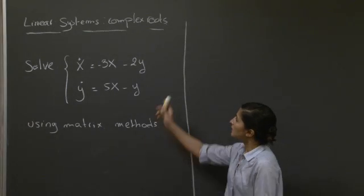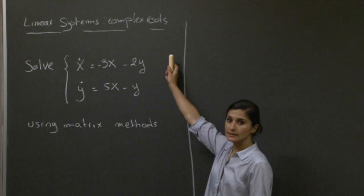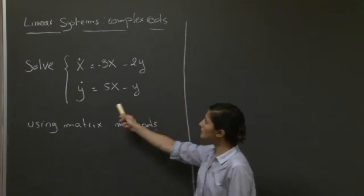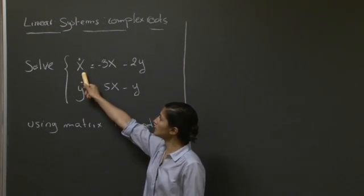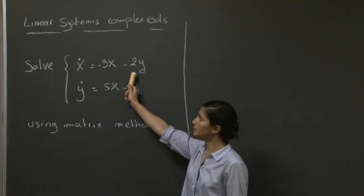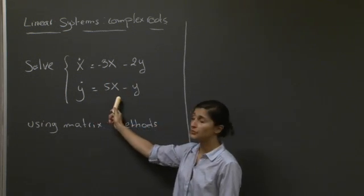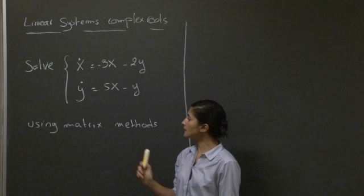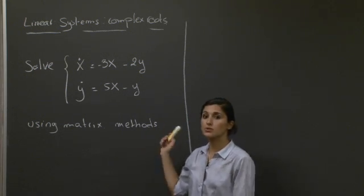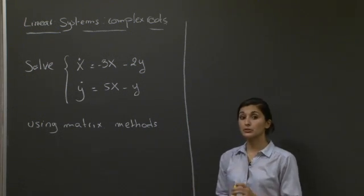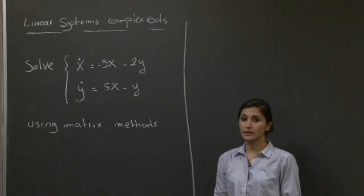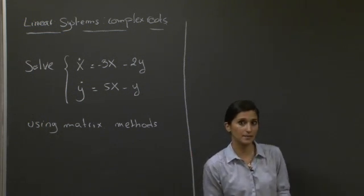Welcome to this recitation. In this recitation, we're going to look at linear systems with complex roots. So the system we're examining is the one giving us x dot equals minus 3x minus 2y, and y dot equals 5x minus y. And you're asked to use the matrix methods to solve this system. So why don't you take a pause here and try to solve this problem? And I'll be right back.